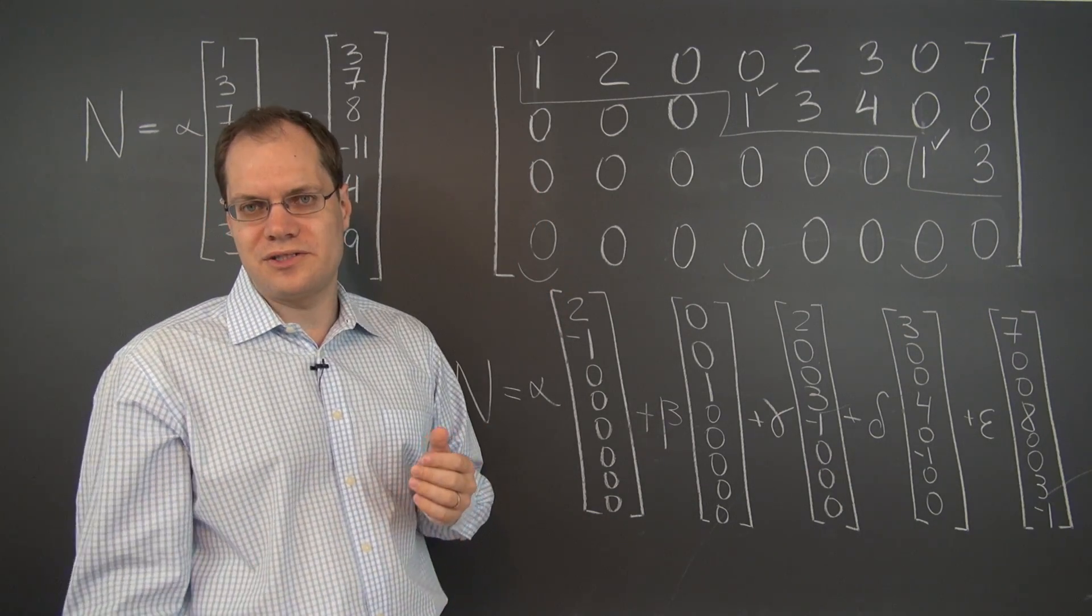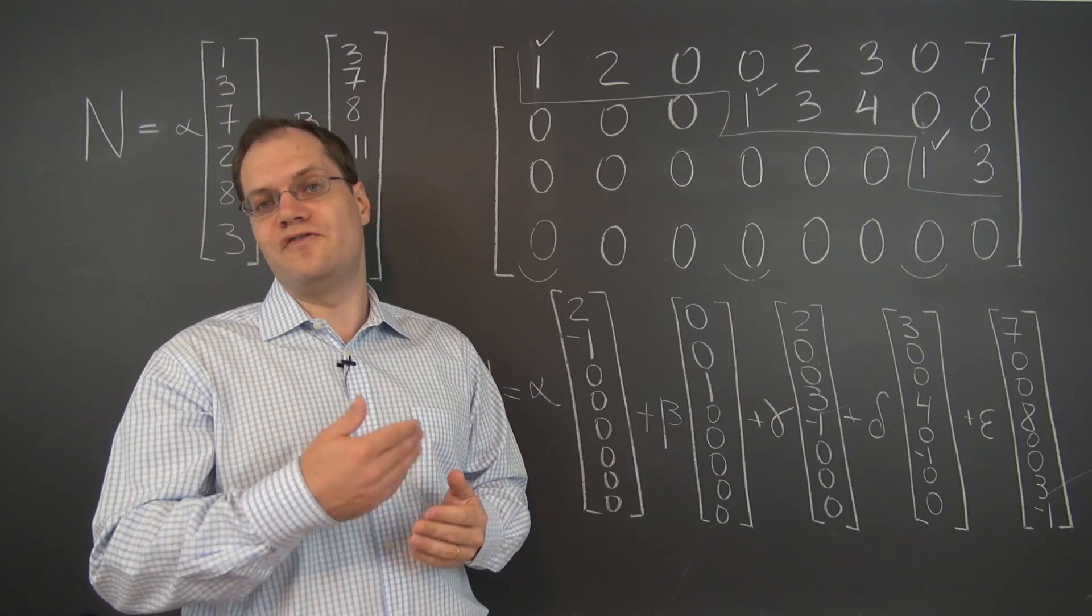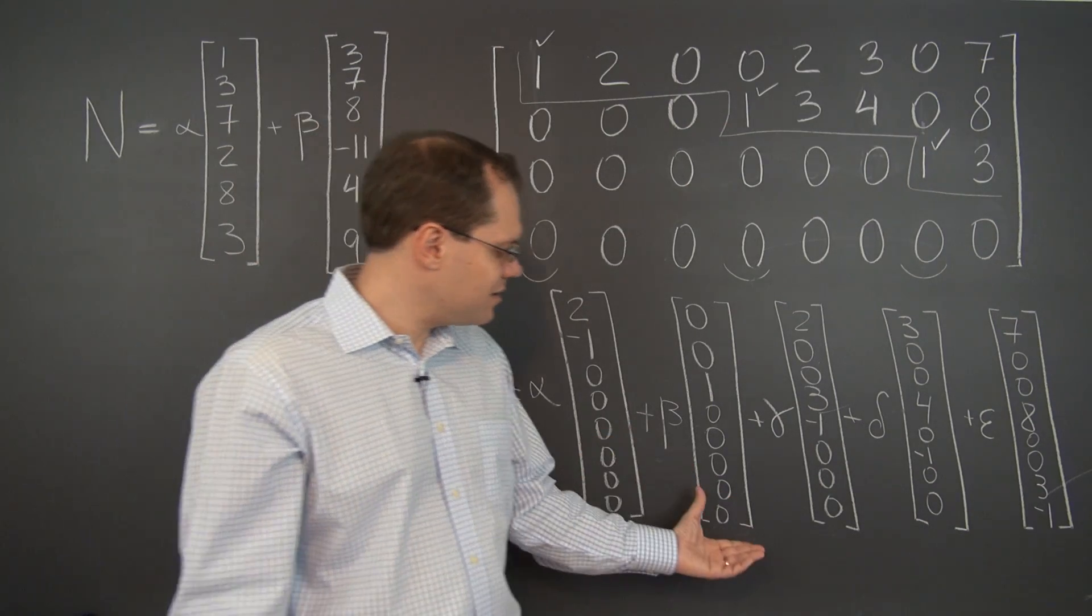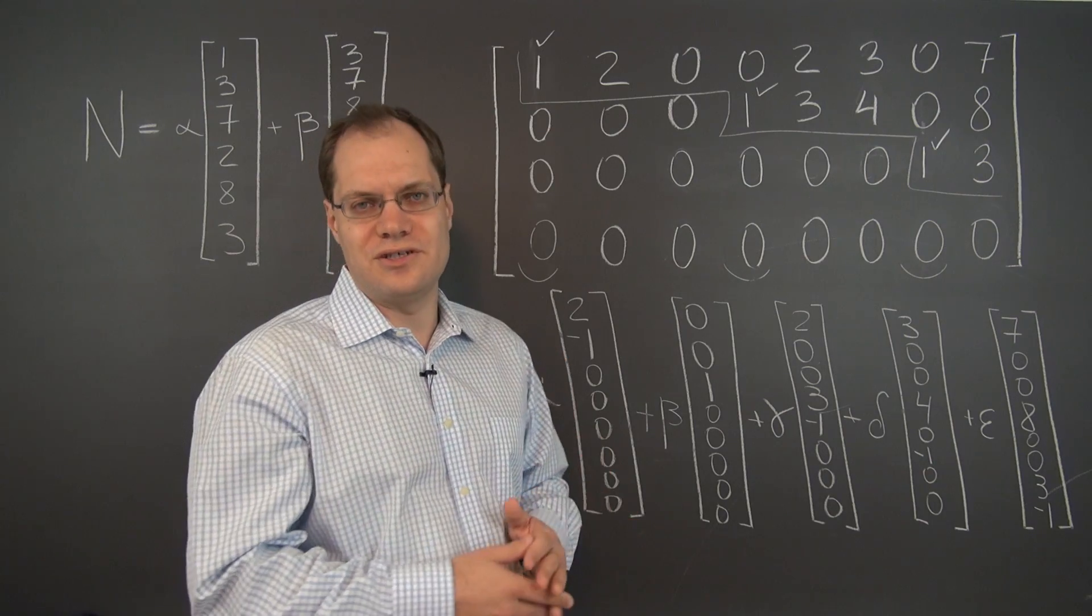of the matrix, this actually reveals to us that the first column is the pivot column. Therefore, it's one followed by all zeros. So the second column must be two followed by all zeros.